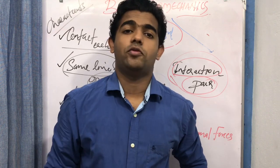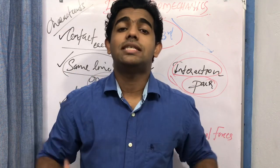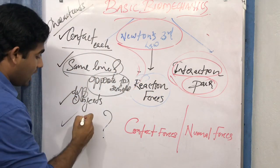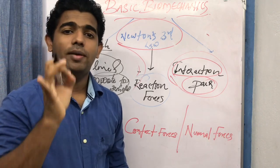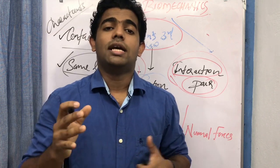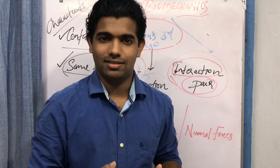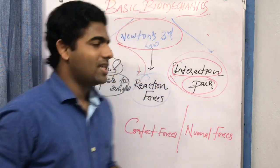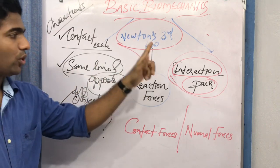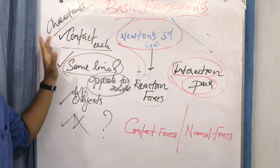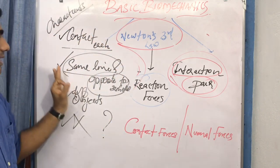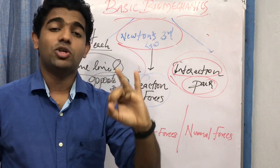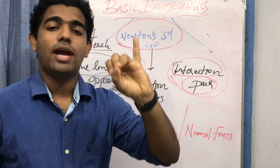To be part of a linear or concurrent force system, forces must act on the same object or same segment. Since action-reaction forces act on different objects, they cannot be resolved together or made to intersect. Therefore, they are not part of any linear or concurrent force system, and resolving these forces against each other is not possible. The direction of these forces is always opposite to each other.